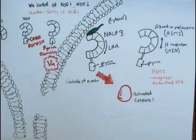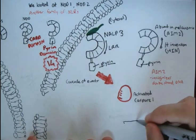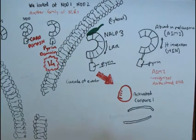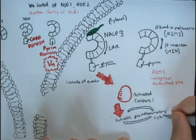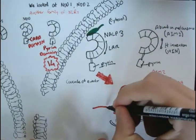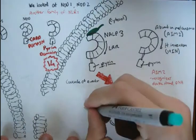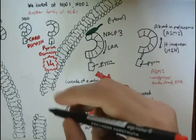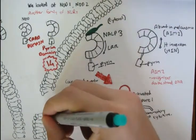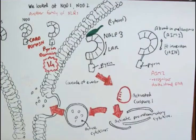This activated caspase-1 then activates inactive pro-inflammatory cytokines which are yet to be packaged. These cytokines get packaged up into endosomes to be sent out of the cell to help in the immune response.